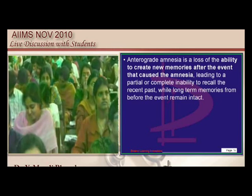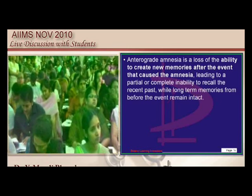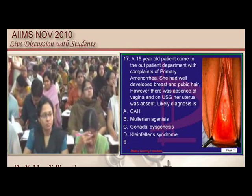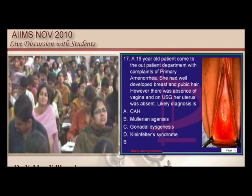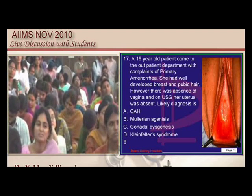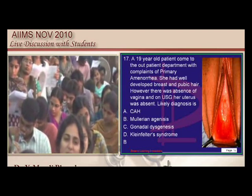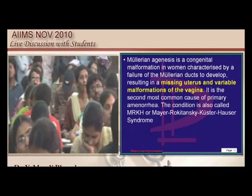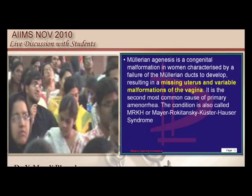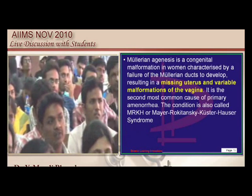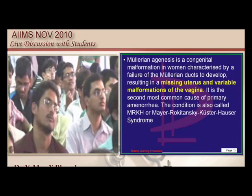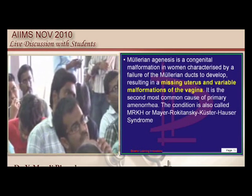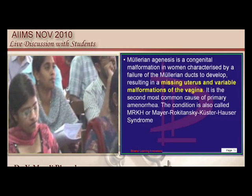A 19-year-old with primary amenorrhea, good breast and pubic hair development but absence of vagina and uterus — this is a classical story of Rokitansky-Küster-Hauser syndrome, which is Müllerian agenesis. Does vaginal development require Müllerian ducts? Only the upper part of the vagina requires Müllerian ducts, not the lower part. That is the reason the patient will have a vagina which ends as a blind pouch.